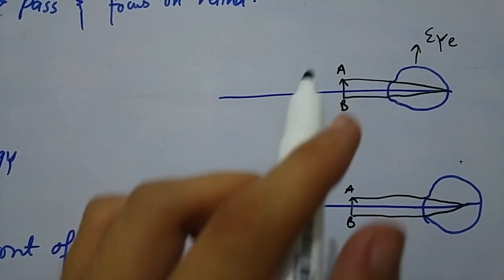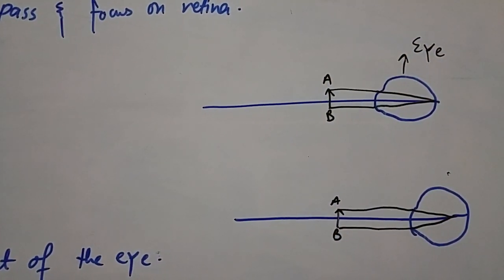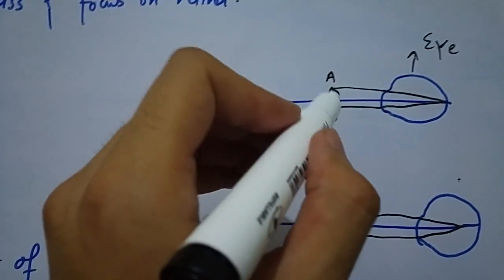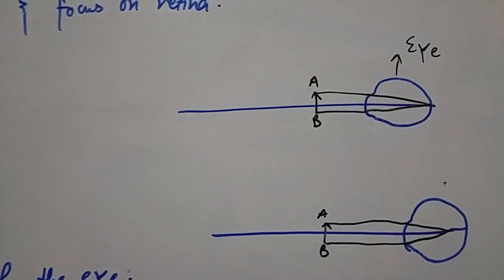Suppose this is an eye and AB is an object. In a normal patient or in a normal eye, the light rays coming from the object are focused evenly on the retina and a clear-cut image is formed.